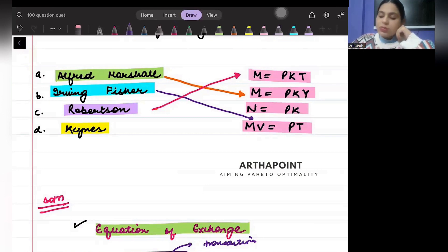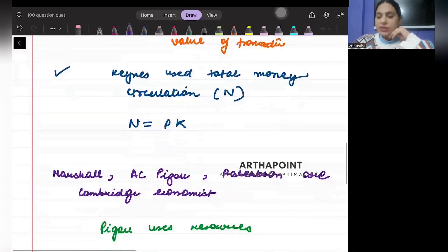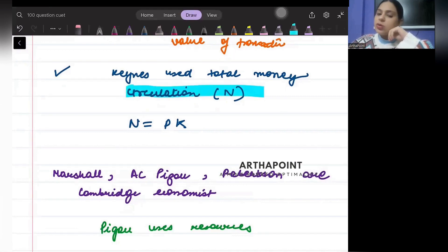Now at last we want to talk about Keynes. So Keynes brought in something different and he said let N be the money in circulation, and he brought the equation N = PK. Not only Keynes, even Pigou brought a very different equation of the quantity theory of money.